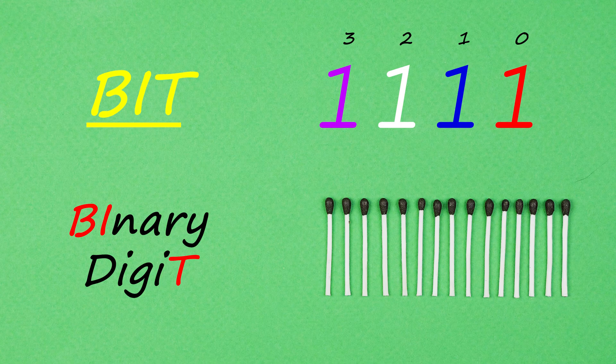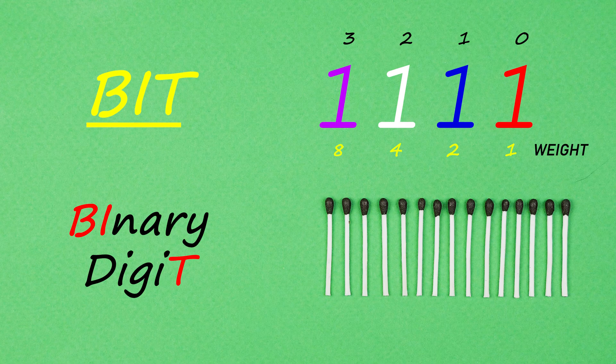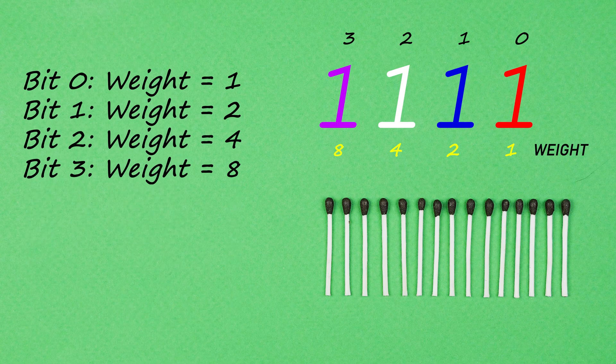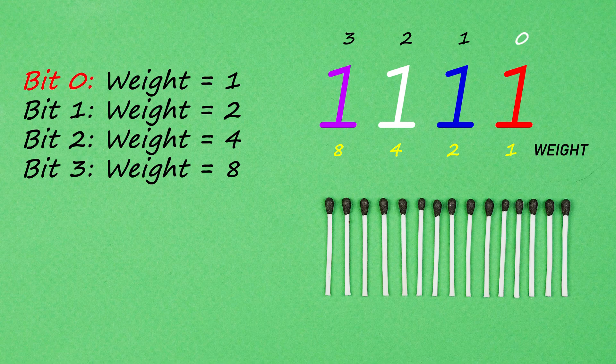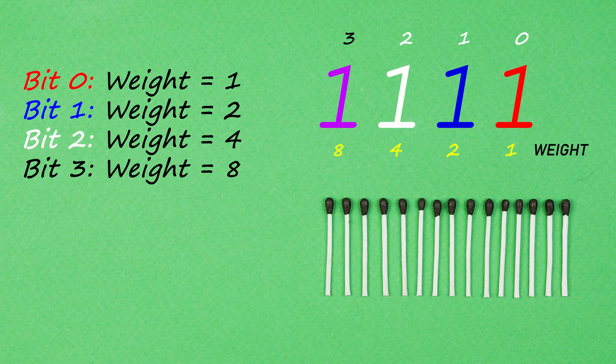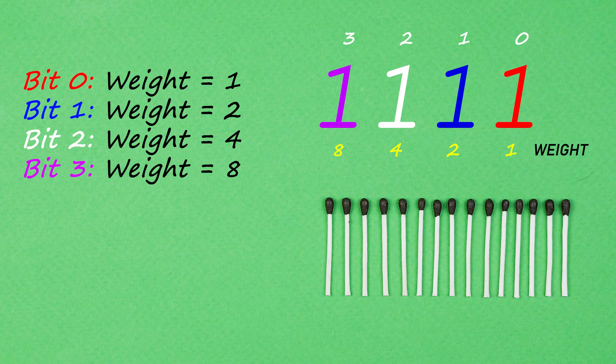Just like in decimal, bits have weights, and as the bit number increases, its weight grows. However, instead of tens, hundreds, and thousands, here we have ones, twos, fours, and eights. Bit 0 is the number of ones. Bit 1 the number of twos. Bit 2 would be the count of fours contained in this number. We double the weight as we move from right to left, and bit 3 would be the number of eights.